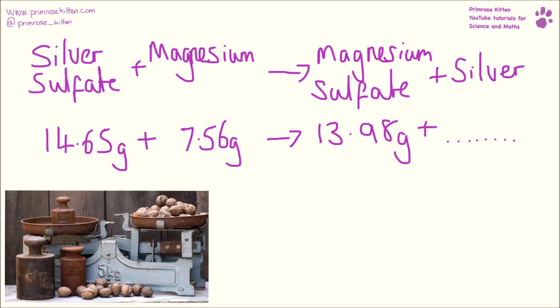Here we have silver sulfate and magnesium making magnesium sulfate and silver, and we are going to end up with 8.23 grams of silver.